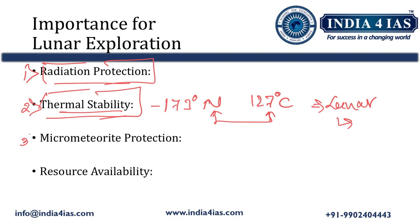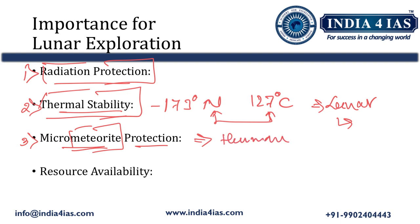The third importance is micrometeorite protection. As we know, the moon doesn't have a proper atmosphere — it lacks a significant atmosphere. Because of this, meteorites can easily strike the surface of the moon. In order to protect future human habitations from these meteorite impacts, lunar caves provide a safer shelter from micrometeorite impacts on the surface of the moon.